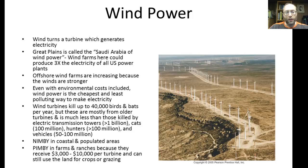Even when including environmental costs, wind power is the cheapest and least polluting way to produce electricity. One environmental cost is that wind turbines kill birds and bats — about 40,000 per year — mostly from older turbines. In perspective, this is far less than deaths caused by other means: over a billion birds are killed by electric transmission towers, 100 million by cats, over 100 million by hunters, and 50 to 100 million by cars and trucks.